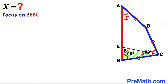Now let's make an observation. We know the whole angle BCD is 80 degrees and this small angle BCE is 20 degrees, so therefore the remaining angle ECD is going to be 80 minus 20, which gives us 60 degrees.